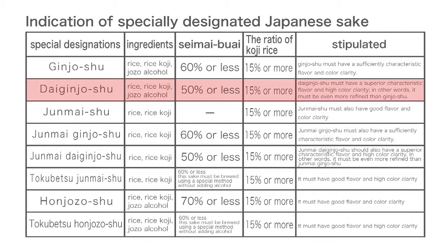Daiginjoshu: the ingredients must be rice, rice koji, and jozo alcohol. It must have a polishing ratio of 50% or less. The rest of the specifications are the same as ginjoshu, but daiginjoshu must have a superior characteristic flavor and high color clarity. In other words, it must be even more refined than ginjoshu.